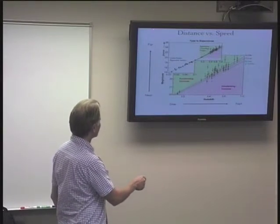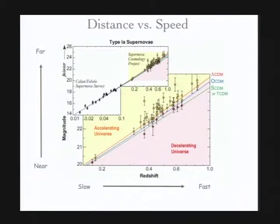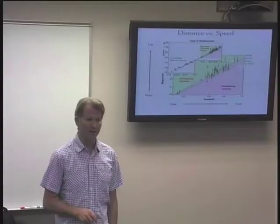This is the data that tells us about the expansion. Redshift is a proxy for speed — things moving away slowly are nearby, things moving away quickly are far away. This data shows that the further you go out, the faster things are moving away, and also the evidence that the universe is not only expanding but the rate of expansion is increasing.